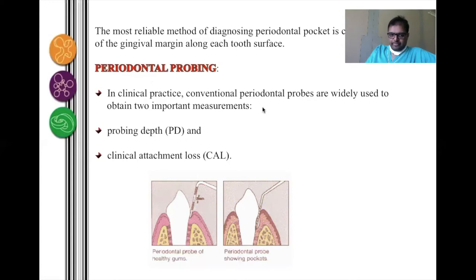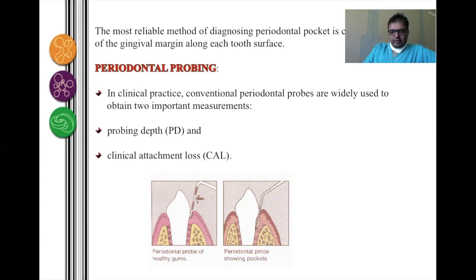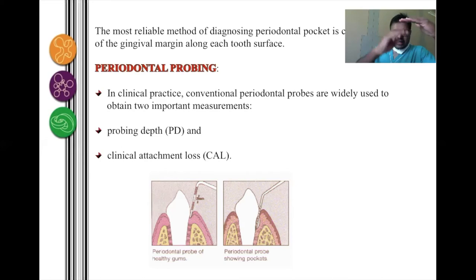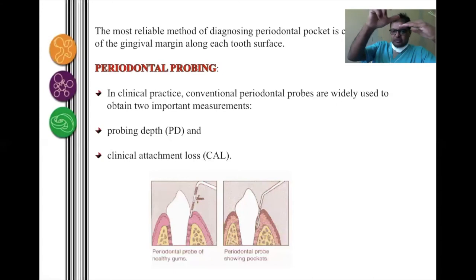There are two important terminologies: probing pocket depth (PPD) and clinical attachment loss (CAL). Probing depth tells us the soft tissue height — the distance from the gingival margin to the base of the pocket. Clinical attachment loss tells us the amount of bone and periodontal ligament loss on the root surface, measured from the cementoenamel junction apically. For example, you can have a 10 mm pocket but only 6 mm of clinical attachment loss if the remaining 4 mm is due to enlarged gingiva, which is not clinically significant.